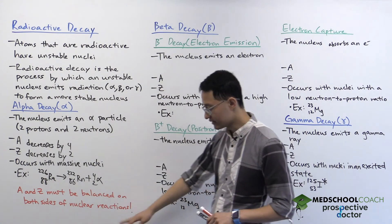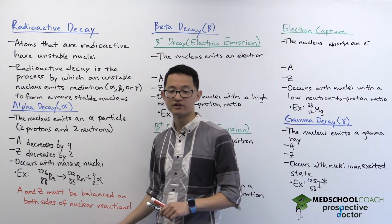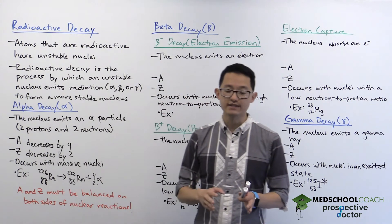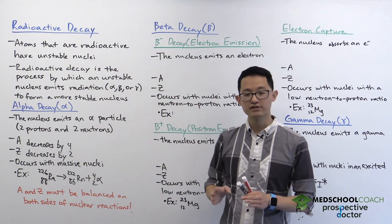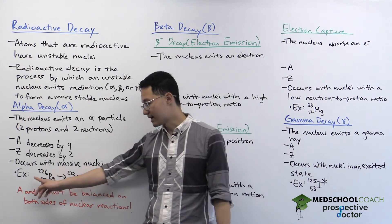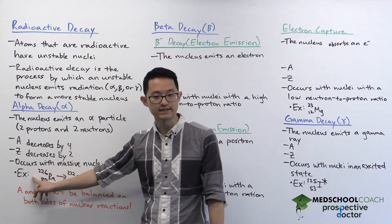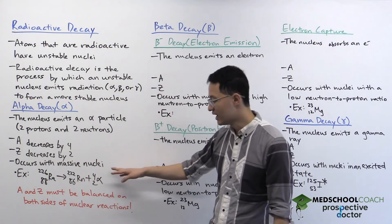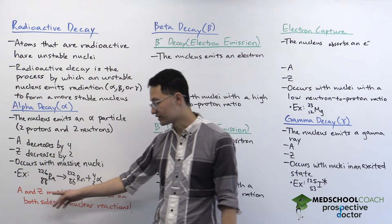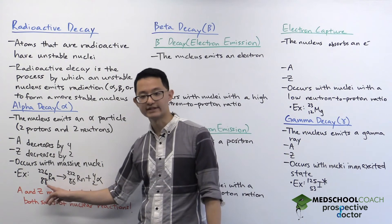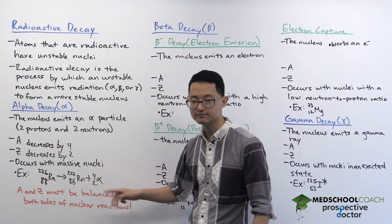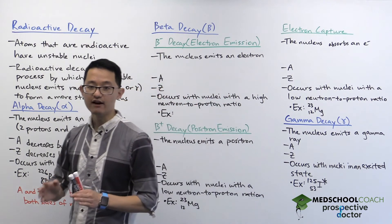Another important point for all nuclear reactions is that the mass number and atomic number must always be balanced on both sides. You can see here that the mass number on the left is 226, and this has to be equal to 222 plus 4 on the right side. The same applies to the atomic number: 88 is equal to 86 plus 2. So that's alpha decay.